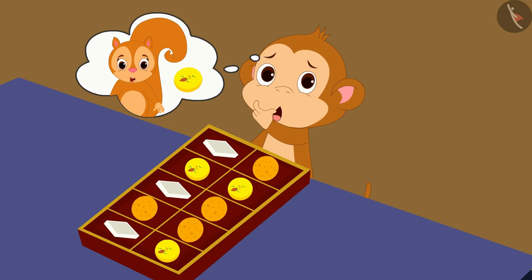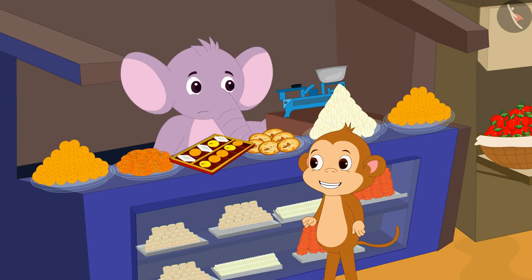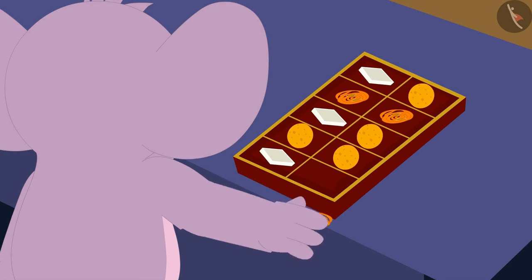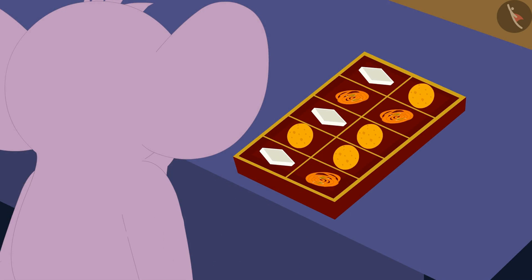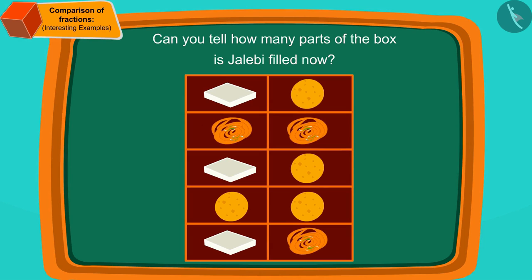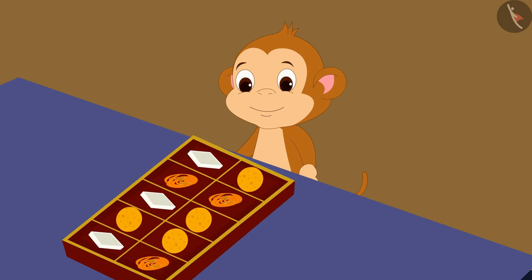When Babban saw the box of sweets, Appu had filled peda in some parts. Chanda had told him that Appu's pedas are not tasty at all, so he asked Appu to fill jalebi in the parts where he had filled pedas. Appu was a bit irritated as his shop was getting crowded, but he quickly filled the jalebi in those parts. Children, can you tell how many parts of the box jalebi is filled in? Yes — jalebi is filled in three-tenth parts of the box.